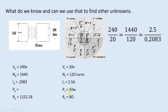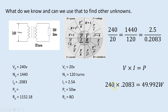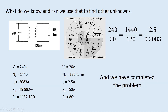As a rule, the power on the primary equals the power on the secondary. Whatever power is on the primary will be on the secondary - so we have 50 watts on the secondary and we'll have 50 watts on the primary. But we're going to prove that theory. Using voltage times current equals power in watts: 240 volts times 0.2083 equals 49.992 watts. The only reason it's not exactly 50 is because we rounded our current. Pop that into the master table - the problem is complete.